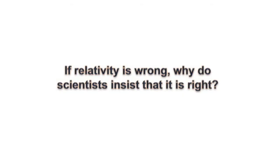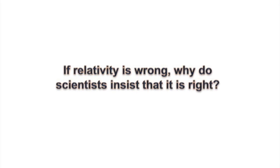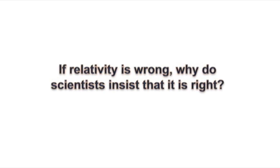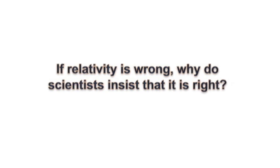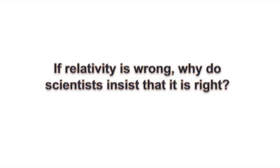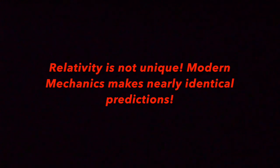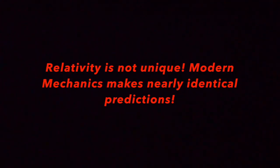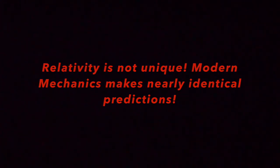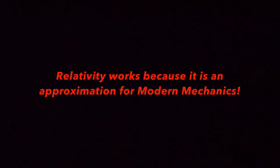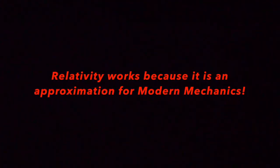This brings us back to our original question. If Einstein is wrong, why does his theory appear to work, and why do scientists believe that it is the only one that accurately predicts certain experiments? And the answer is, Einstein's theory is not the only one that predicts certain experiments. We now know that modern mechanics will also do that. And we have explained why it appears to work. Because it is an approximation of modern mechanics.